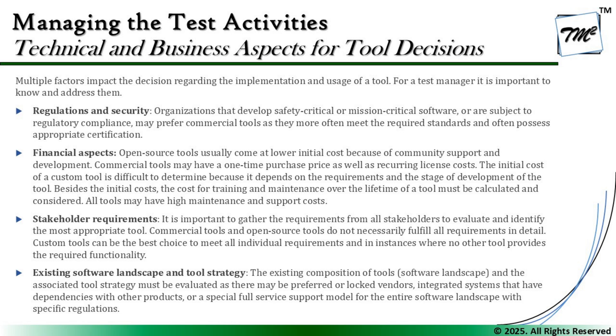The third element is stakeholder requirements. It is not just limited to us — many people will be involved. It is important to gather requirements from all stakeholders to evaluate and identify the most appropriate tool. Commercial and open source tools do not necessarily fulfill all requirements in detail, whereas a custom tool built in-house may be the best choice to meet all individual requirements, especially where no other tool provides the required functionality. The benefit of a custom build tool is that we can design and implement it the way we want, rather than adapting to ready-made tools whose features a vendor may not change for a single company.